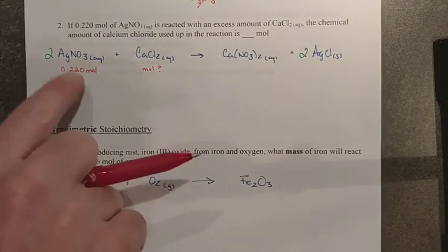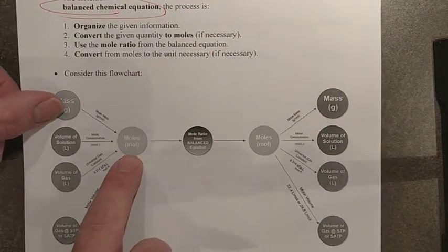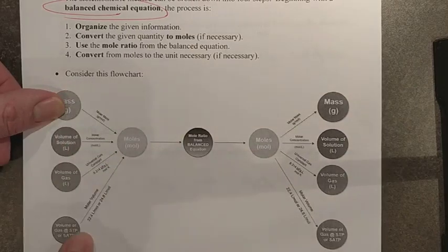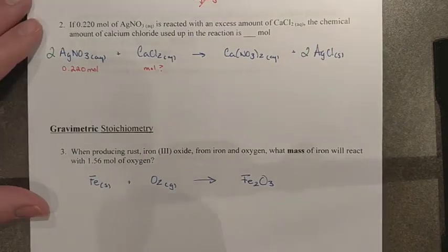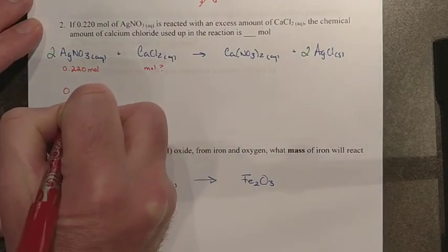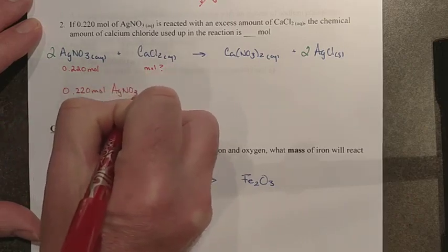Now since we already have moles, we remember that we have our starting quantity, so we can go straight to stoichiometry. There's no conversions necessary if we've been given a mole quantity. So I start off with that, 0.220 moles, and I write down the species AgNO₃.